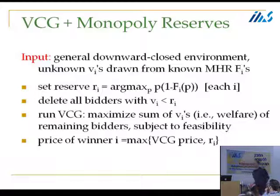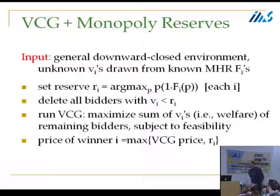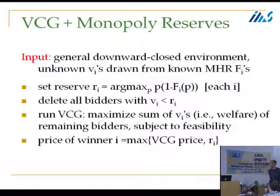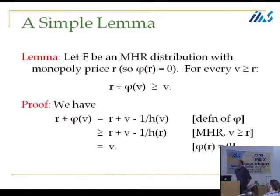It's a simple one-dimensional optimization problem; the maximizer is the reserve price for bidder i. If they have the same distribution it's the same reserve price; different distributions give different reserve prices. The mechanism is: collect bids from bidders, delete anybody who doesn't clear their reserve, and then simply do welfare maximization — run the VCG mechanism — on who's left. You charge the unique incentive-compatible prices, which are simply the maximum of the reserve price and the VCG price.